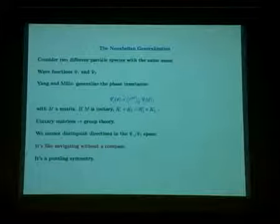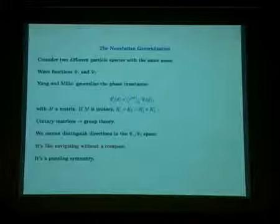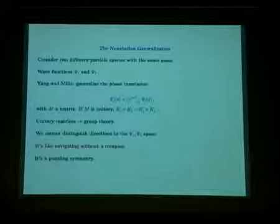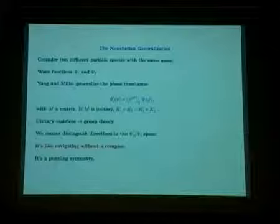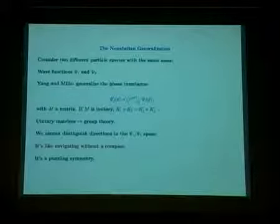Our psi prime now has an index J, J runs from one to two. In terms of our original wave functions, psi 1 and psi 2, we multiply by the exponential of some matrix M. If e to the iM is unitary, then the total kinetic energy K1 plus K2 is equal to the kinetic energy of these two wave functions combined. The unitary matrices implies that we have group theory. We can't distinguish, however, using the kinetic energy. We simply cannot distinguish directions in this psi 1 and psi 2 space. It's like navigating on some sphere. There's no north pole on the sphere, no equator, no south pole. Your position on the sphere is completely a matter of definition. It's a puzzling kind of symmetry.